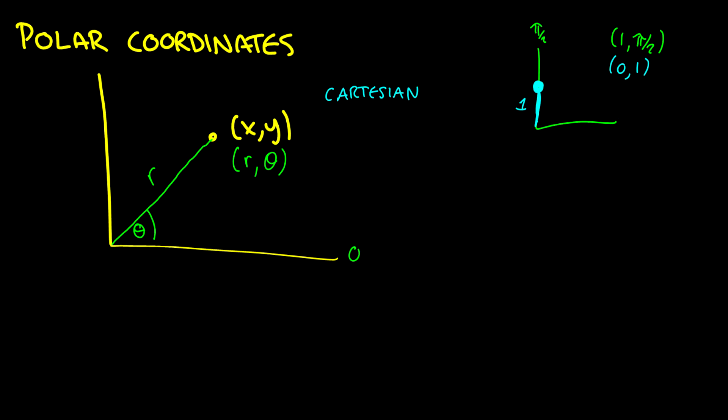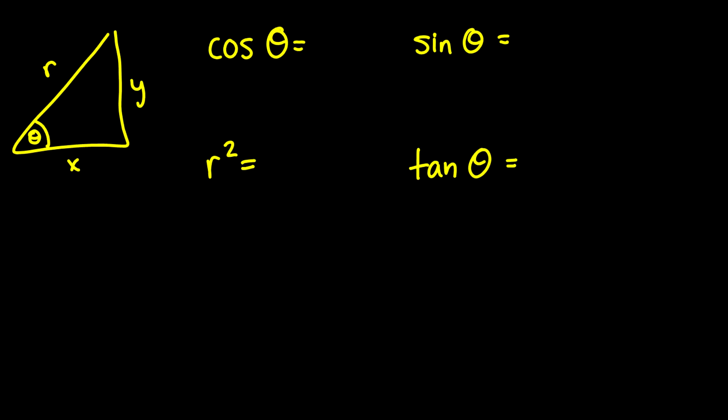So the question is, how do we convert the two? Well, we have a nice little triangle here, and let's find our cosine, sine, and tangent values. So cosine is going to be x over r. Sine is going to be y over r. Again, I'm just taking it from the diagram over here to find sine, cosine, and our tangent will be y over x.